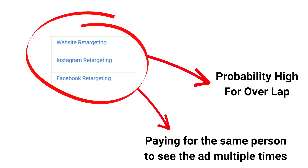This is called overlap because the probability is that some people who have visited your website have also gone to Instagram or liked your Facebook page — they're going to be in these different audiences. When this happens, Facebook will show that same ad you're running in each ad set, and since these people are being shown that same ad over and over again, it fatigues your ad faster and costs you more in advertising.